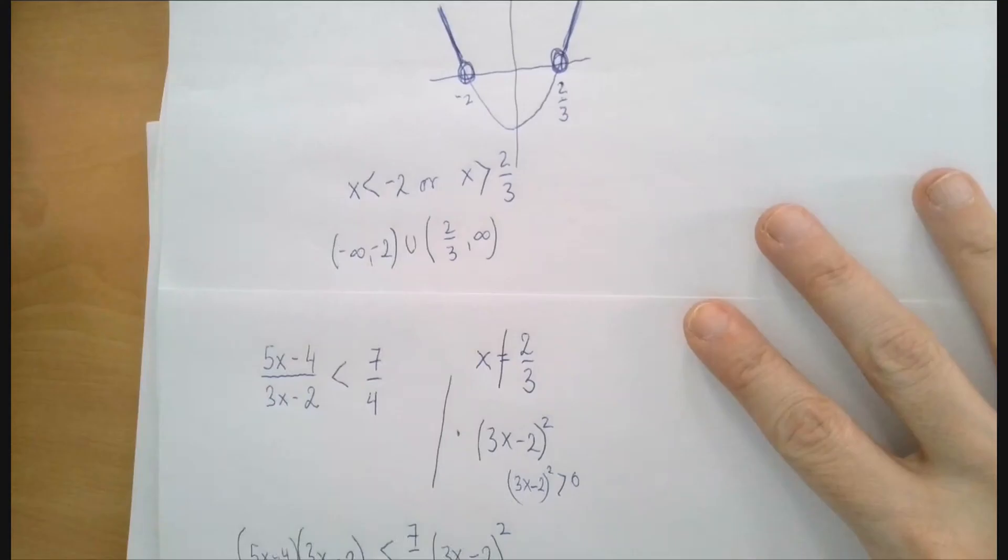We can check. For example, if you look at the solution set or the parabola, you can easily see that x equals 0 should not be a solution. So if you put in x equals 0, the right hand side is already 7 over 4, the left hand side is negative 4 divided by negative 2, that's plus 2. That is not less than 7 over 4. Close, but not quite.